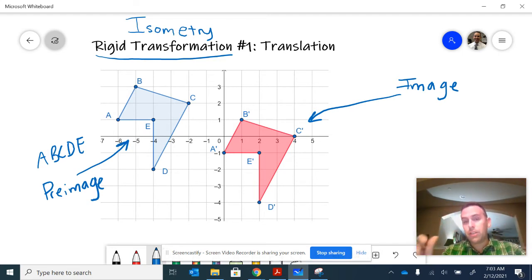After we have had some kind of transformation, in this case a translation, we use the notation prime: A prime, B prime, C prime, D prime, E prime to indicate there's been some sort of movement.